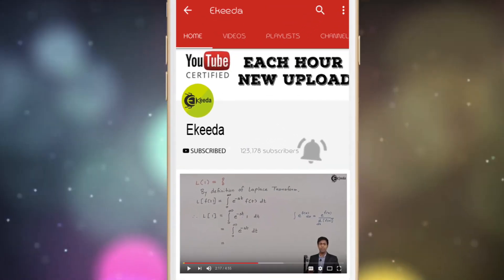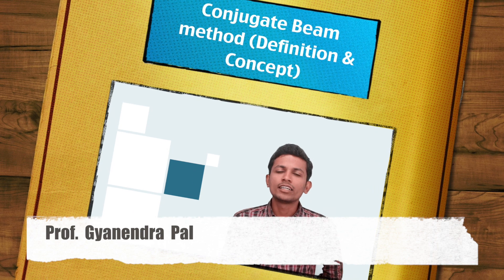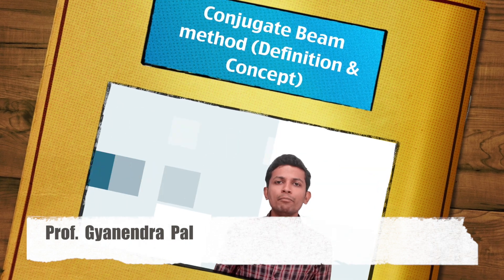Subscribe to the IGRA channel and press the bell icon to get updates. Hello friends, today we are starting another chapter named 'Deflection of Beam Using Geometrical Method.' We have done with Mohr's method, and now we are starting two more methods: conjugate beam method and moment area method. Today we are seeing the conjugate beam method — its definitions, concepts, and problems.